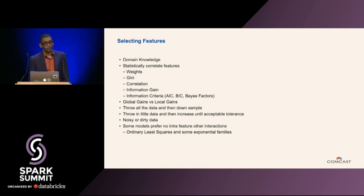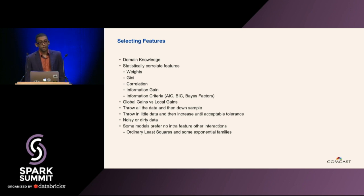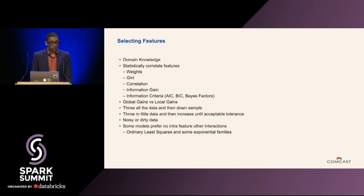You can also use information criteria — one of my favorite methods. Basically you try a bunch of different models where you subtract and add features. For example, try a model with all features, remove one feature, then try another model where you add that feature back. You compare the Akaike information criterion and the Bayesian information criterion, both readily available within Spark for most estimators. Or you can compare Bayes factors, which compare model accuracy given all the data in a probabilistic fashion — this is not in Spark and not done often, but it should be. You also need to account for noisy and dirty data and always understand the generative process. Some models don't like when features are correlated with each other — this is common in ordinary least squares and some exponential families.